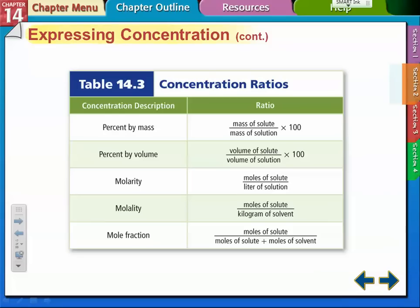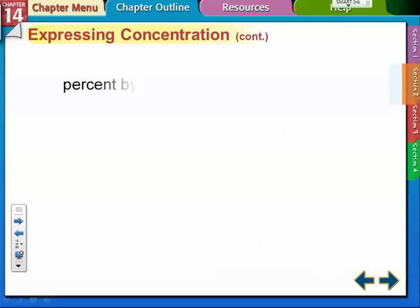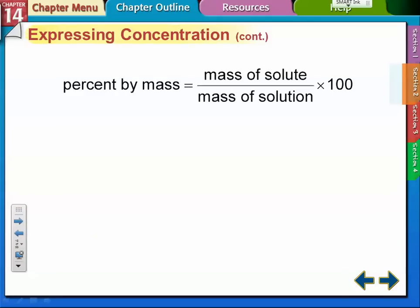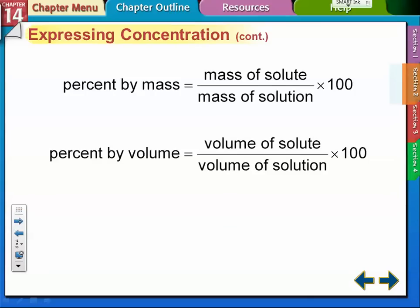The formulas for these are on page 480 of your book. This is all the little formulas we're going to use here. We're going to figure out these five things and I'm going to do examples on each one. Percent by mass is mass of the solute divided by the mass of the solution times 100.